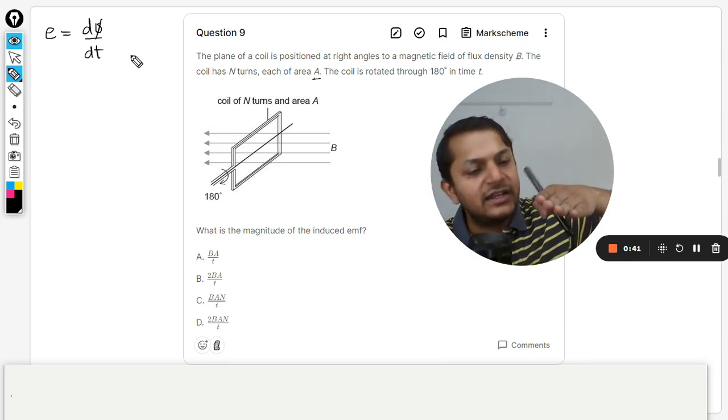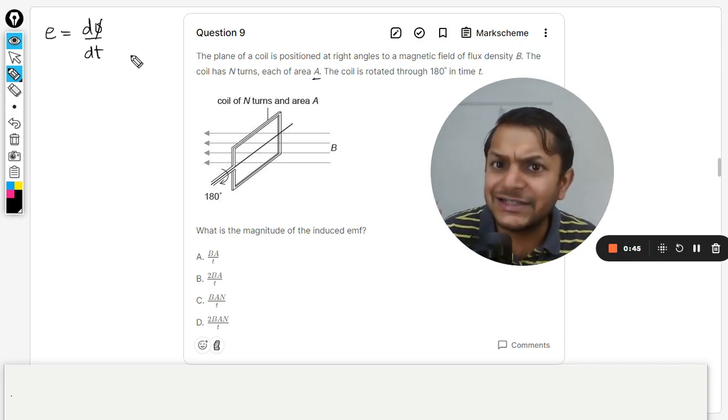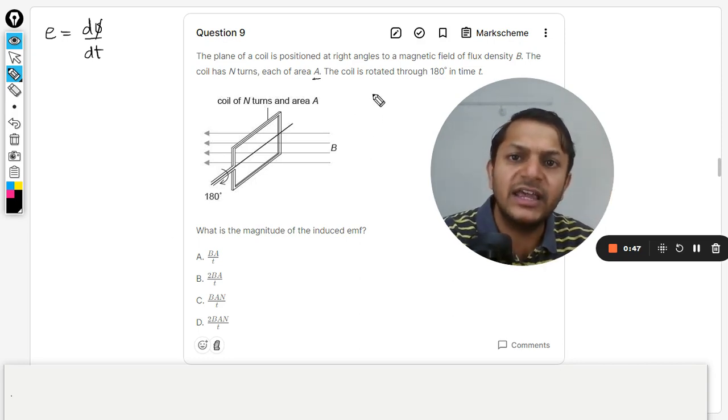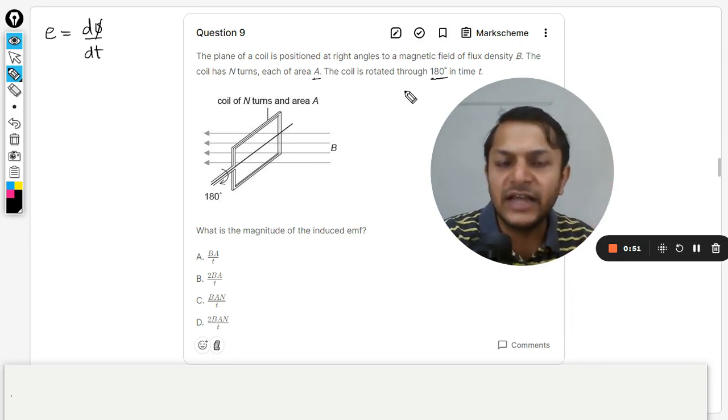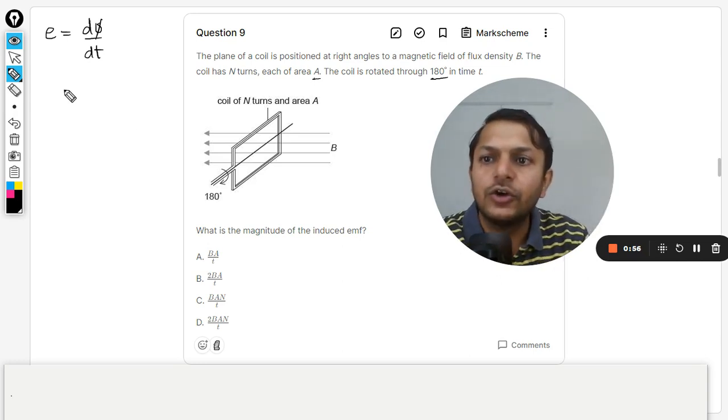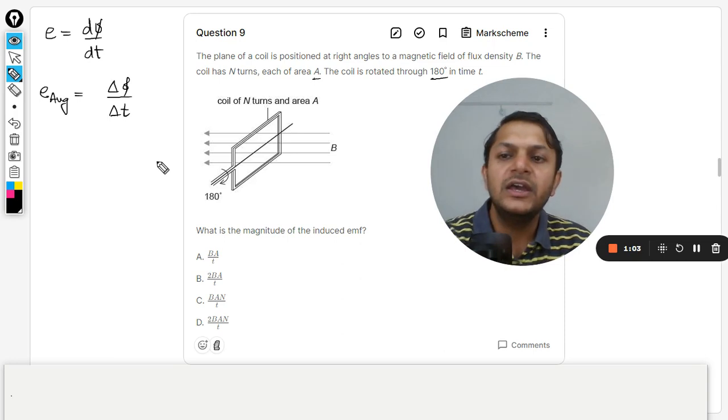But we are not concerned with that now because it is rotated about 180 degrees in the time t. So we are just concerned with the initial and the final position. We are indeed talking about the average value of the EMF induced, and that will be given by change in flux divided by change in time.